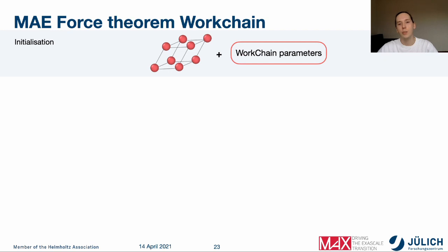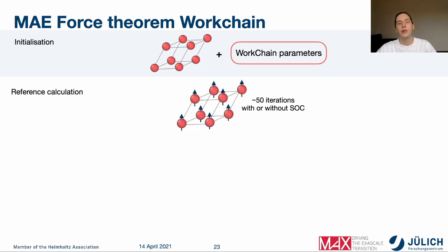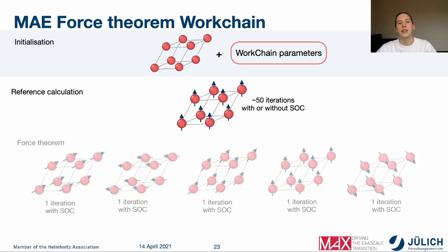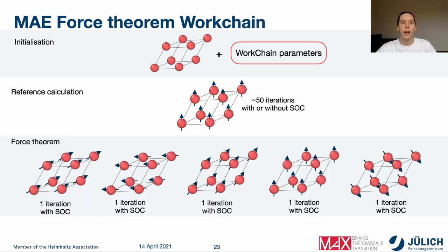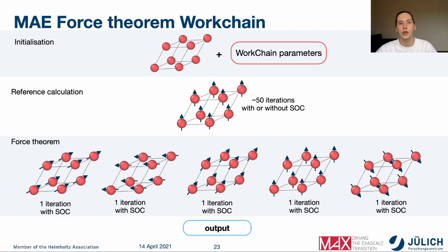The force-theorem version of the magnetic anisotropic energy work chain also accepts a structure and parameters, but in contrast to the self-consistent version, it first converges the charge density for a single structure and then uses this data to perform a single-iteration magnetic anisotropic energy estimation. This results in a less accurate calculation, but requires much fewer iterations, saving computational time and resources. After submission, the data is gathered and an output dictionary is produced which is easy to analyze.